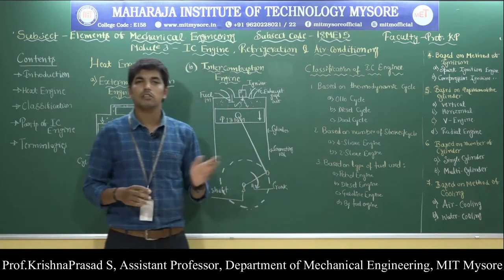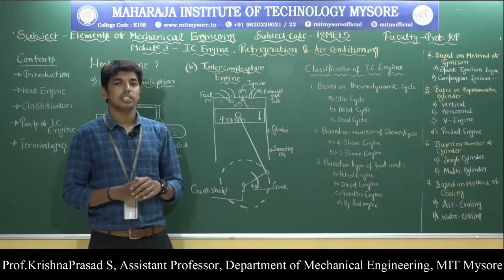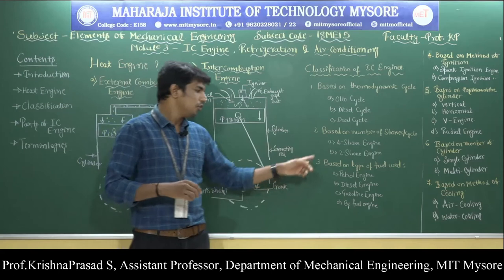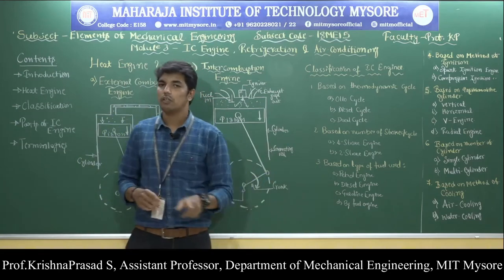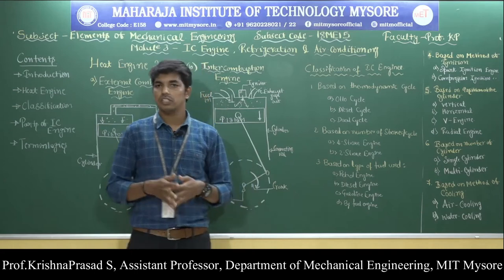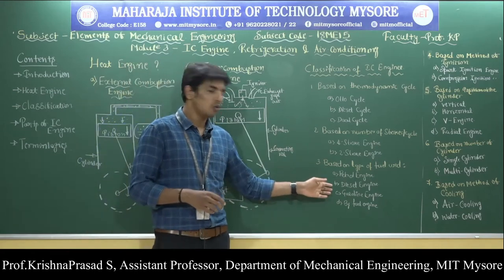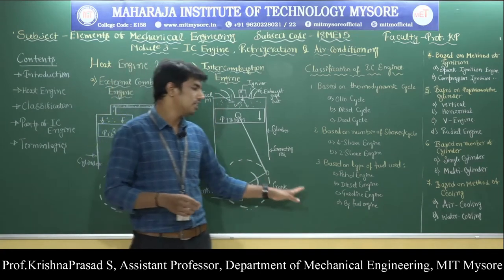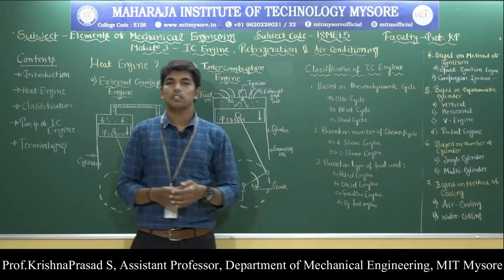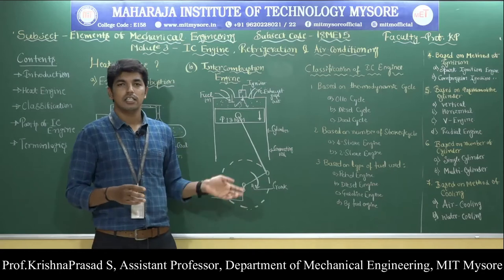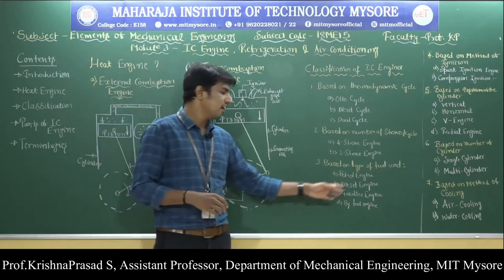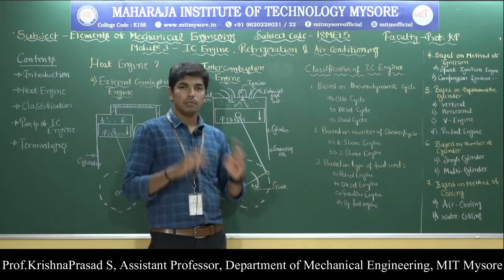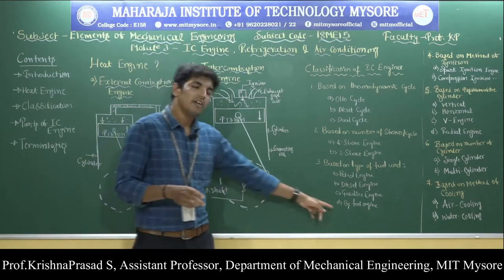The third classification is based on the type of fuel used. IC engines are classified into four types: petrol engine, diesel engine, gasoline engine, and bi-fuel engine. If the fuel used is petrol, it is called a petrol engine. If the fuel used is diesel, it is called a diesel engine. If the fuel used is natural gas or biogas, it is called a gasoline engine. If the fuel used is a mixture of two fuels, it is called a bi-fuel engine.